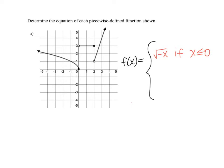Moving on to the second piece, which I'll label number two: it's a horizontal line at y equals 3. In piecewise function notation, we don't need to write y again since f of x already represents y, so we just write 3. However, we don't want the entire line — we only want a piece of it. Looking at the graph, we want to start where x equals 0 and end where x equals 2.